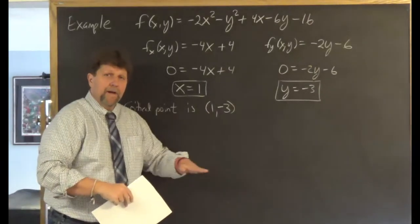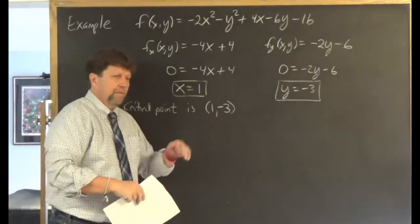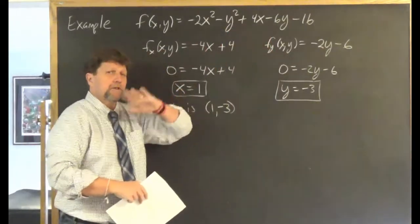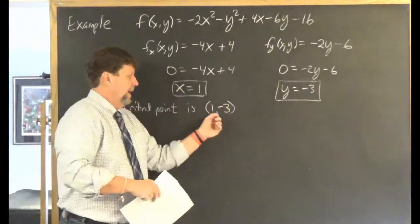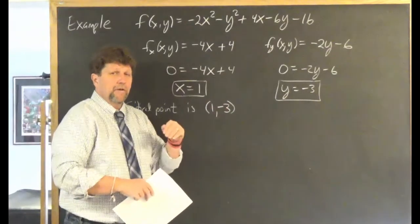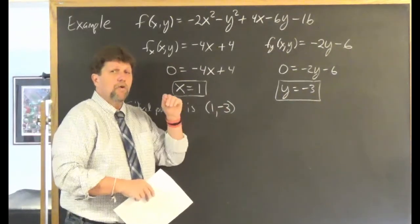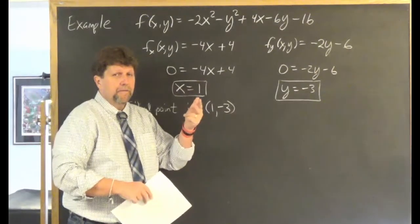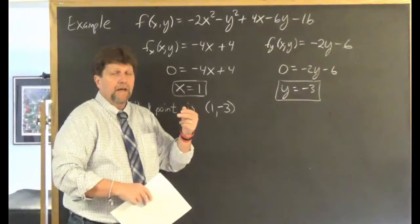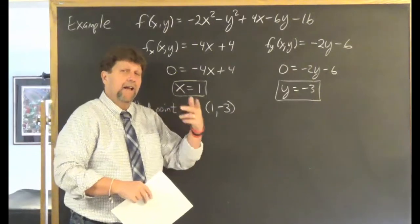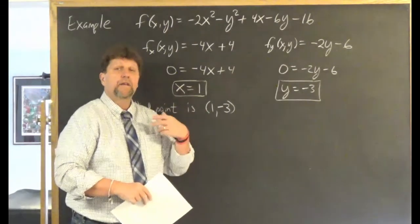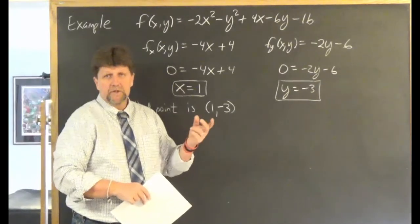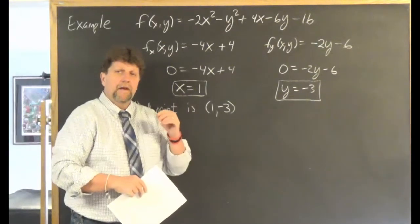Remember, that point (1, negative 3) is in the xy-plane. The graph of this function is some surface in space, and at that point the z-coordinate might be a maximum, it might be a minimum, or it might be neither — which is called a saddle point. We'll analyze that later in this section.